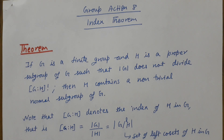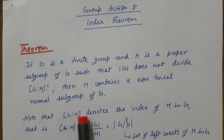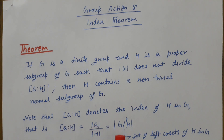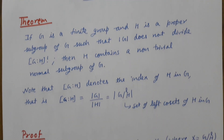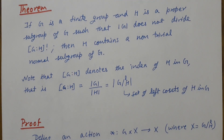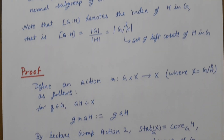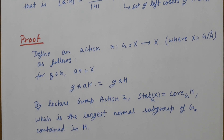Here, this notation denotes the index of H in G. The index of H in G is the order of G divided by the order of H, which is the same as the number of left cosets of H in G. Now let us prove it. We will define an action of G on X, where X is the set of left cosets of H in G.